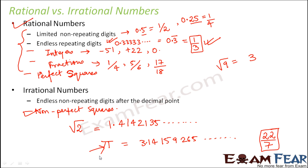But if somebody asks you whether 22/7 is an irrational number — no, 22/7 is a rational number because it is in the form of p/q where p and q are integers and q is not equal to 0. So we can see that irrational numbers indeed exist.